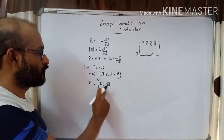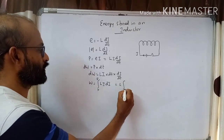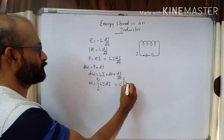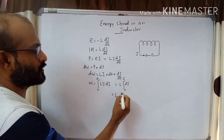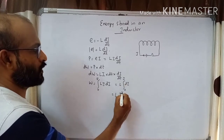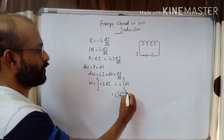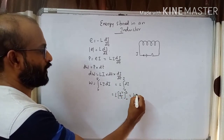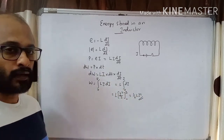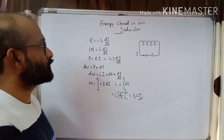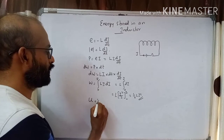Integrating, L is taken outside: W equals L times the integral from 0 to I of I dI. The integral of I dI equals I² divided by 2. Applying the limits, we get W equal to half L I squared. This work done is stored as energy, so the energy stored in an inductor is U equal to half L I squared.